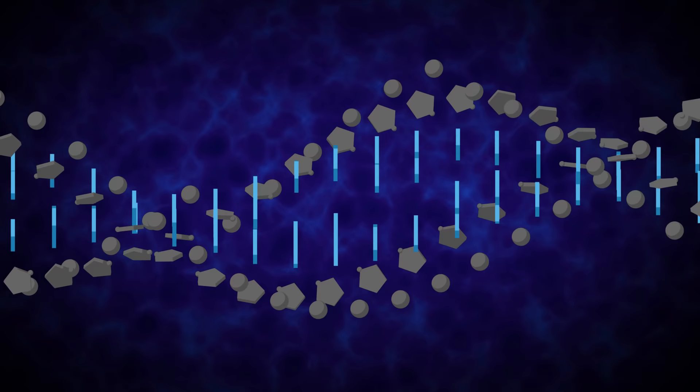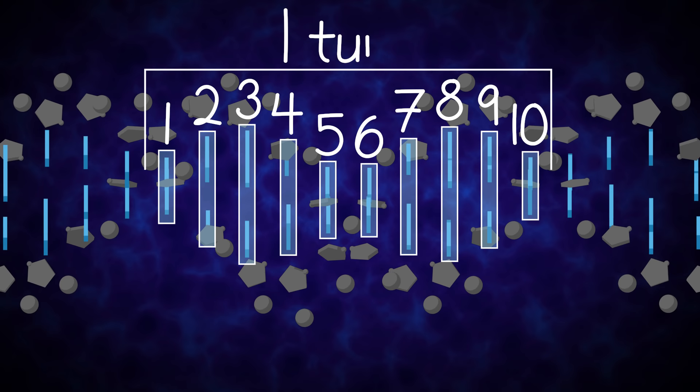The double helix structure of DNA is highly regular. Each turn of the helix measures approximately 10 base pairs.